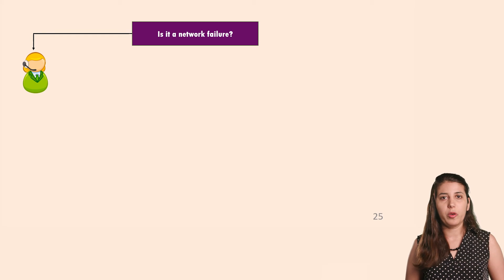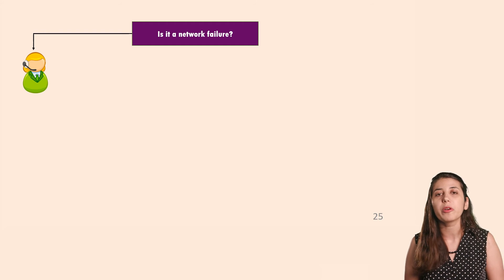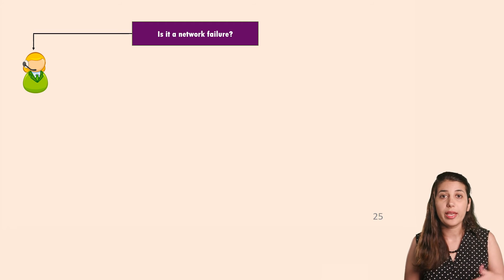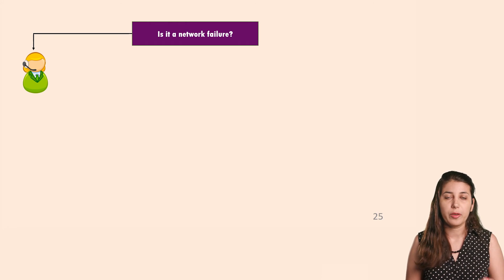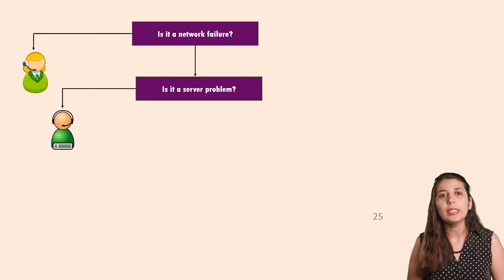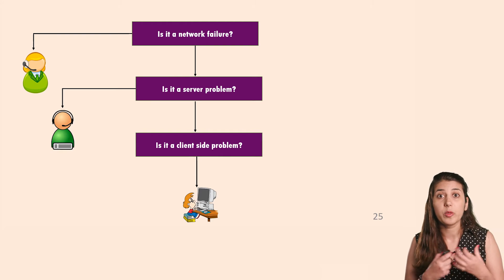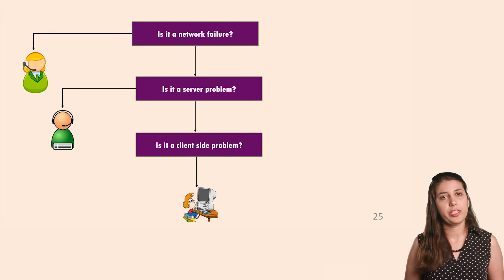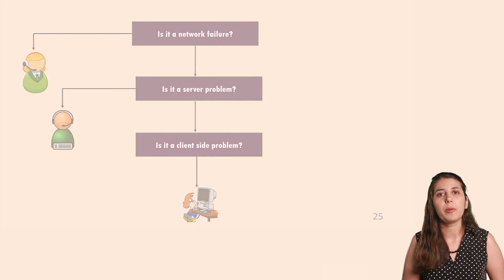Here's what our algorithm looks like. We first identify whether we have a network failure. If yes, we go to the network operators. If not, we ask whether it's a server-side failure; if yes, we go to the server-side team. Finally, if it's not a server-side problem, we ask whether it's a client-side failure — was it my application that caused the failure? — and if yes, we resolve it that way.